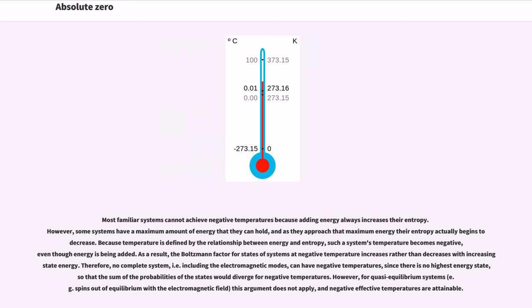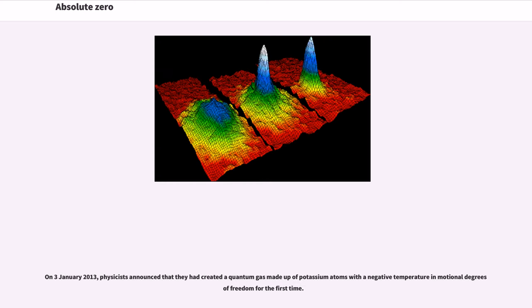However, for quasi-equilibrium systems, for example spins out of equilibrium with the electromagnetic field, this argument does not apply, and negative effective temperatures are attainable. On January 3, 2013, physicists announced that they had created a quantum gas made up of potassium atoms with a negative temperature in motional degrees of freedom for the first time.